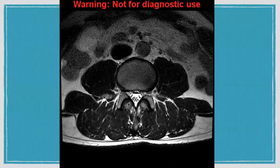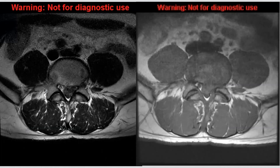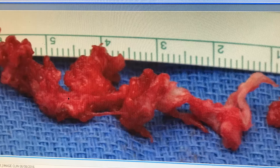This image a level above shows how the thecal sac should normally look — nice, plump, and wide open with the nerve roots inside. At the affected level you see none of that bright CSF. The surgeon who performed the operation sent a picture afterward: these are the millimeters of disc material he had to remove that had extruded. It was a significant amount, and he said it was under so much pressure that it continued squirting out as he was removing it.